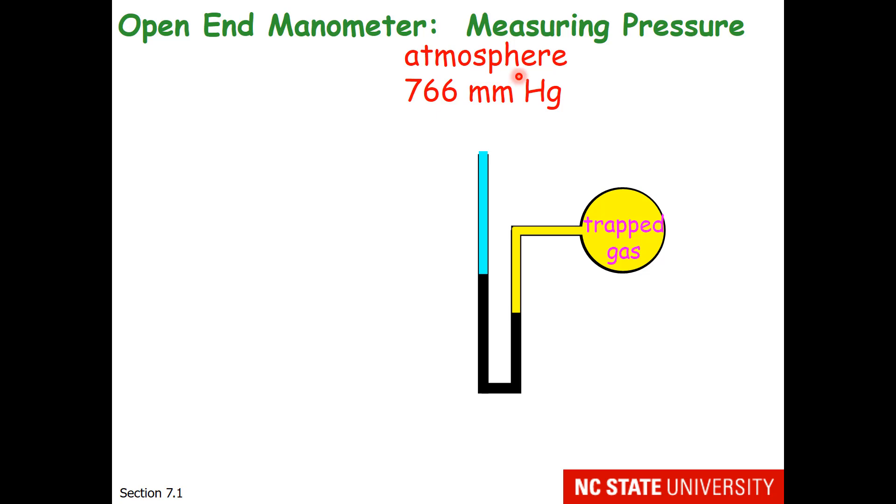The top of the glass tube is open to the atmosphere. So we have the atmosphere, which on this particular day happens to be 766 mm of mercury, and the trapped gas in the bulb. Now if the gas in the bulb and the atmosphere are at the same pressure, then the liquid level in the U-tube is the same on both sides.